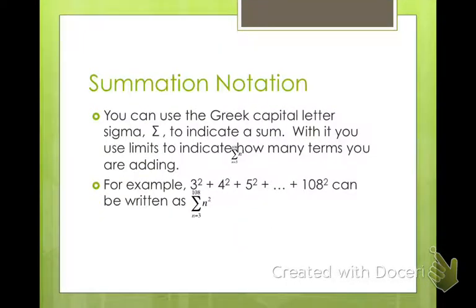We also have summation notation. We can use the Greek capital letter sigma, which is that E looking thing, to indicate a sum. You're going to add them together. With it, use limits to indicate how many terms you're adding. For example, if you have 3 squared plus 4 squared plus 5 squared all the way up to 108 squared, you can write it as the summation of n equals 3, because that's our first term, to 108. First term goes on the bottom, last term goes on the top, and then whatever you're doing on each term. Every term is squared, so we have 3 squared, then 4 squared, then 5 squared.